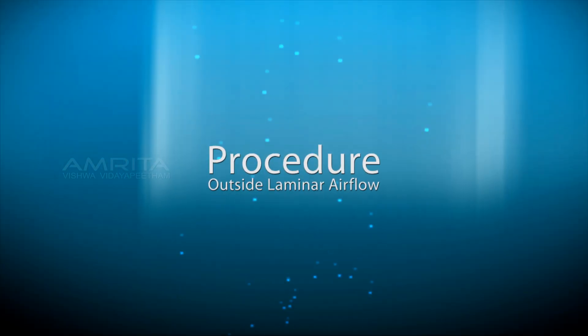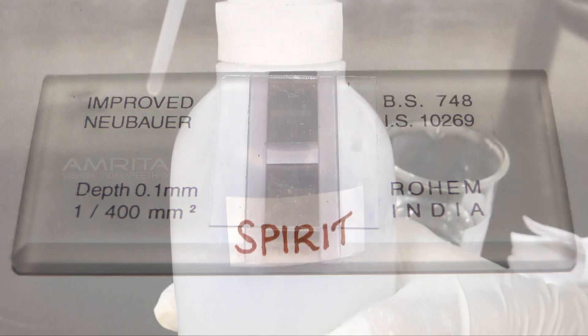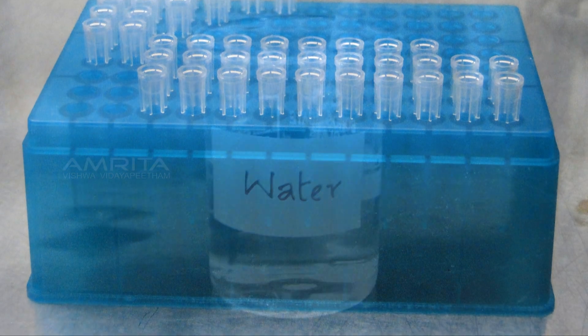Now the procedure outside the laminar airflow. Materials required for the procedure: hemocytometer plus a supply of cover slip, spirit, tissue paper, micro pipette, pipette tip box, and glass beaker with water.